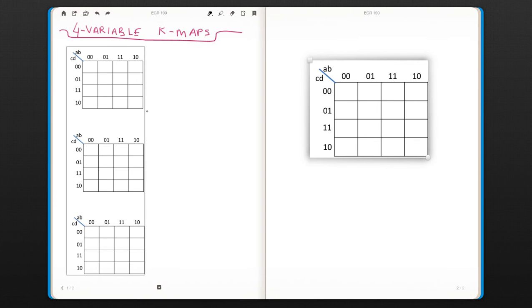Let's discuss the four-variable K-maps. For a four-variable K-map, as you see on the very left top corner, we have two inputs: a, b and c, d. And this is our table.